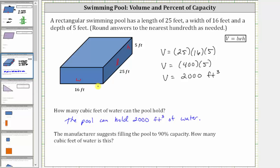But that would be if the water is filled all the way to the top. The manufacturer suggests filling the pool to 90% capacity. To determine how many cubic feet of water 90% capacity is, we need to find 90% of 2,000 cubic feet. What is 90% of 2,000 cubic feet?